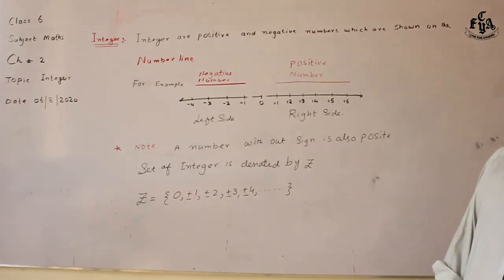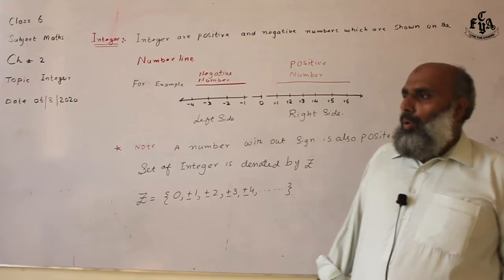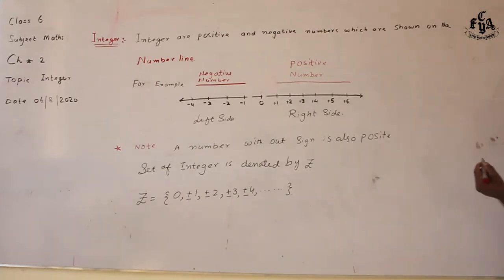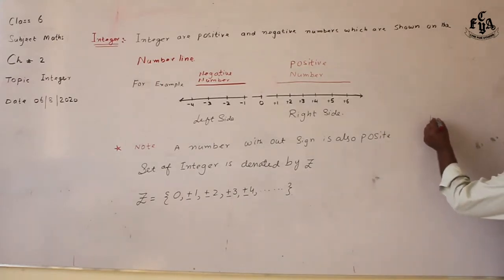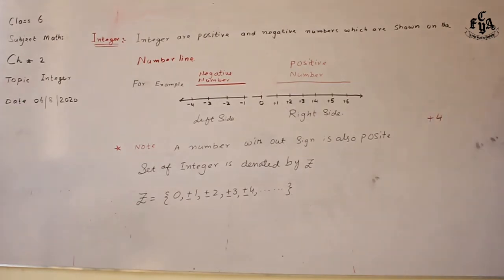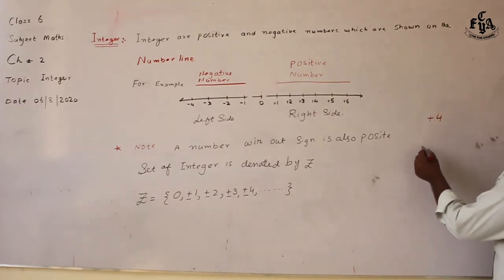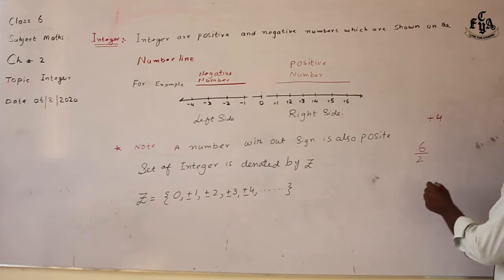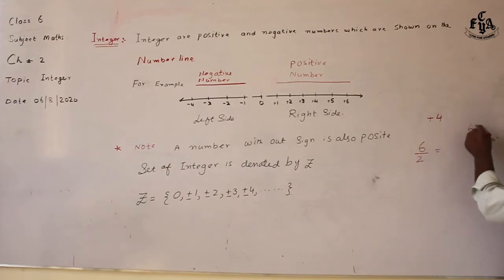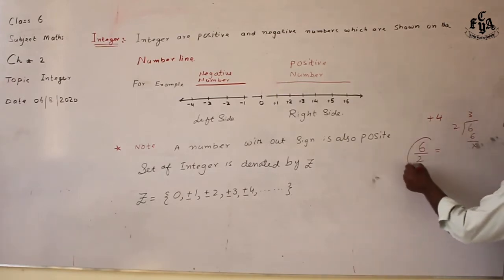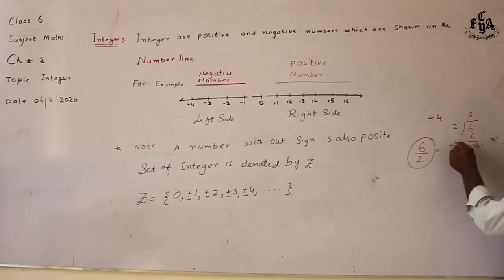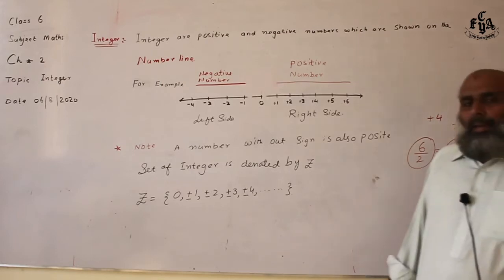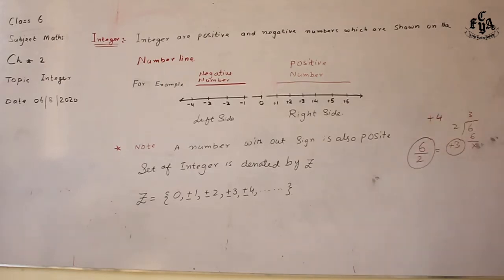If someone asks you to define integers, consider: is plus four an integer? Yes, it is an integer. If someone asks whether six by two is an integer, we can divide it: six divided by two equals three, so the answer is plus three, which is an integer — even though the original expression was in fraction form.